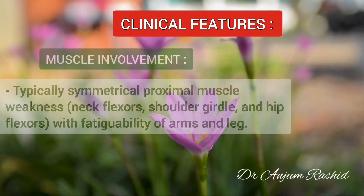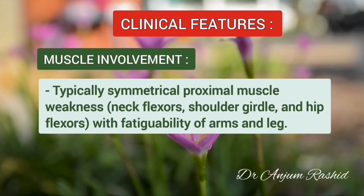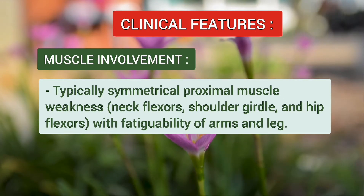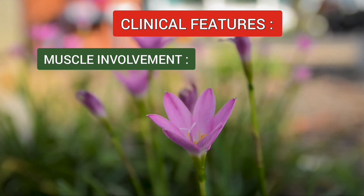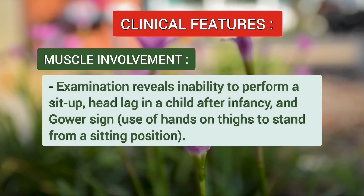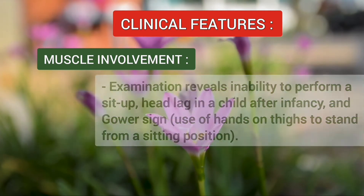Typically there is symmetrical proximal muscle weakness. Neck flexors, shoulder girdle, and hip flexors are involved, with fatigability of arms and legs. Examination reveals inability to perform a sit-up, head lag in a child after infancy, and Gower sign — that is, use of hands on thighs to stand from a sitting position.